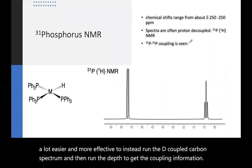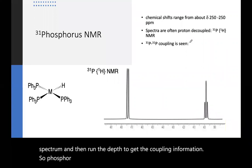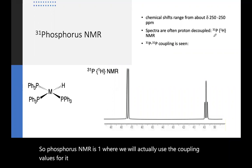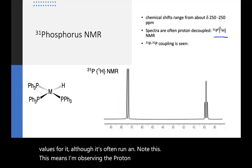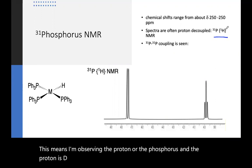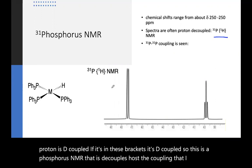So phosphorus NMR is one where you will actually use the coupling values for it. Although it's often run, and note this, this means I'm observing the proton or the phosphorus, and the proton is decoupled. If it's in these brackets, it's decoupled. So this is a phosphorus NMR that is decoupled. So the coupling that I see is phosphorus-phosphorus.